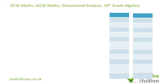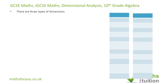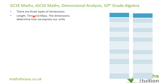Hello and welcome to this exercise on dimensional analysis. This is quite common for GCSE but not as common in IGCSE, though it does occur now and again. It's also suitable for 10th grade algebra. We're looking at dimensions here — there are three types: dimensions for length, dimensions for time, and dimensions for mass. For this exercise, we're just looking at dimensions for length only.